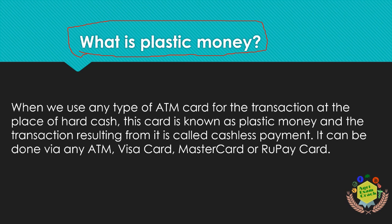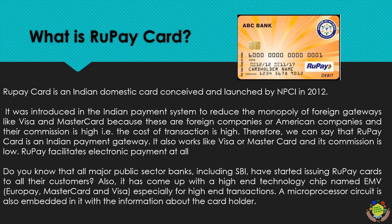Plastic money: the credit or debit cards you use are called plastic money. When you use any ATM card for transactions in place of hard cash, the card is known as plastic money, and the resulting transaction is called a cashless payment. We now use Visa cards, Mastercard, and RuPay cards.